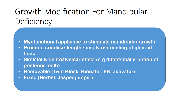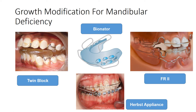Appliances for mandibular deficiency can be divided into removable and fixed types. Removable appliances include twin blocks, bionators, function regulators, and activators. Fixed appliances include the Herbst appliance and the Jasper Jumper. The twin block is widely used because it is the only myofunctional appliance that comes as two separate pieces rather than one large block, making patient compliance much better compared with other types of myofunctional appliances.